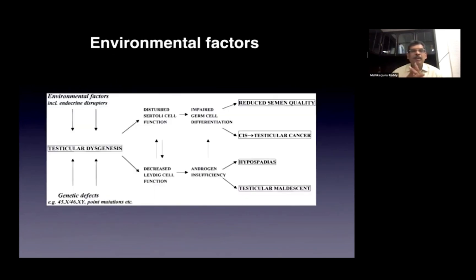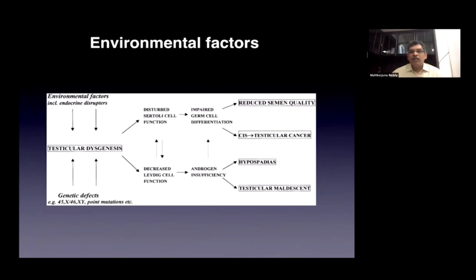Then came a bigger area: environmental factors, including endocrine disruptors. These come from pesticides and plastics — bisphenols — and are attributed to testicular dysgenesis, decrease in Leydig cell function, androgen insufficiency, hypospadias, and testicular mal-descent. They have also been linked to decreased fertility rates and increased anogenital distance. However, there is no definite evidence that environmental factors are the primary disruptors in testicular mal-descent.